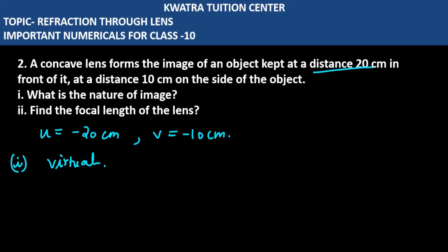Another hint is the type of lens used. It's a concave lens, and in a concave lens the image is always erect and diminished. So these are the characteristics of the image.